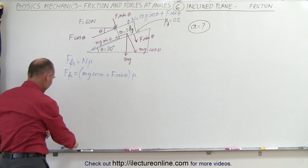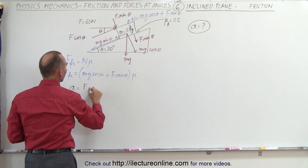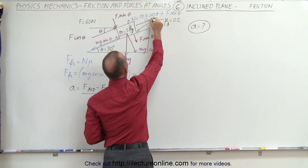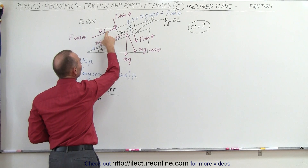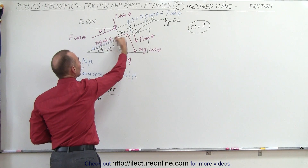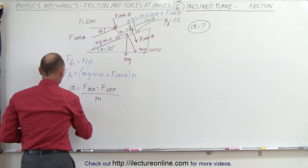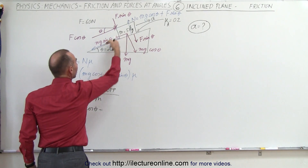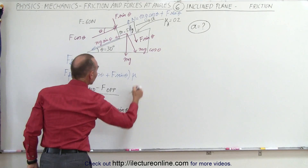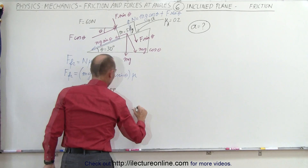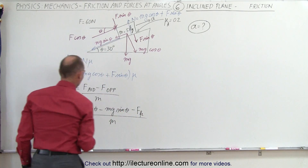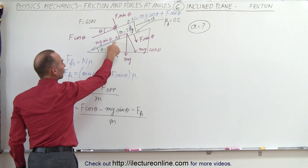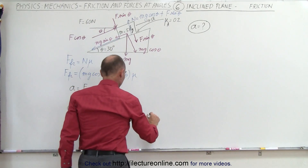To find the acceleration, by definition, the acceleration will equal all the forces aiding the acceleration minus all the forces opposing the acceleration, divided by the mass of the block. Assuming the acceleration is in this direction, the component pushing up the incline aids the acceleration, while the weight component down the incline and the friction force oppose it. So acceleration equals f cosine theta — the component pushing the block up the incline — minus mg sine theta — the component pulling the block down — minus the friction force, all divided by the mass.